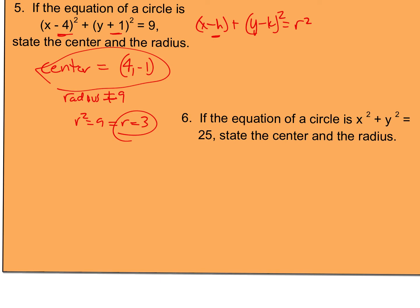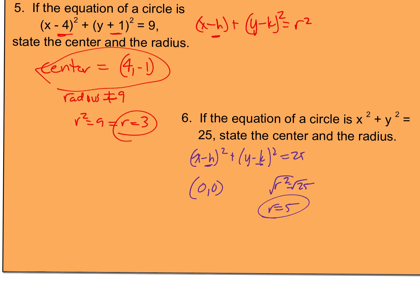For x squared plus y squared equals 25, this is like saying h and k are both zero. So my center is (0, 0) and r squared equals 25, so r equals 5. Being able to recognize that when there's no subtraction or addition, the center is at the origin — that's all I'm doing.